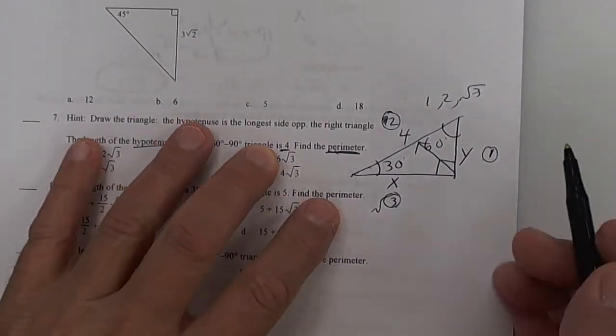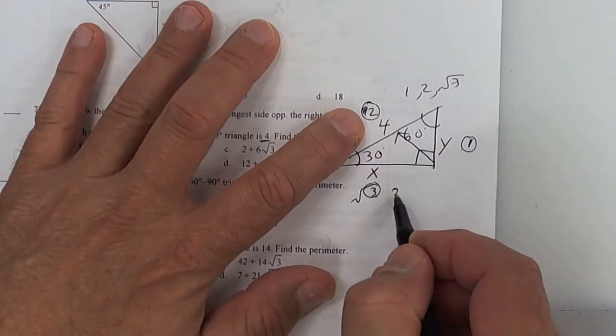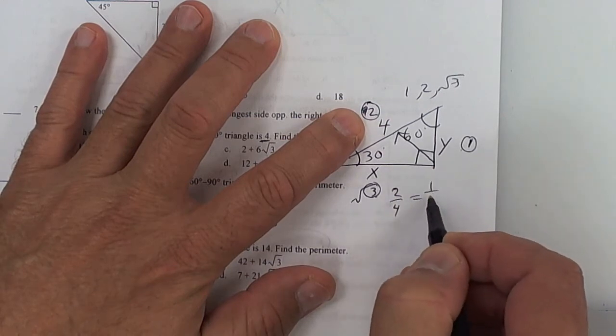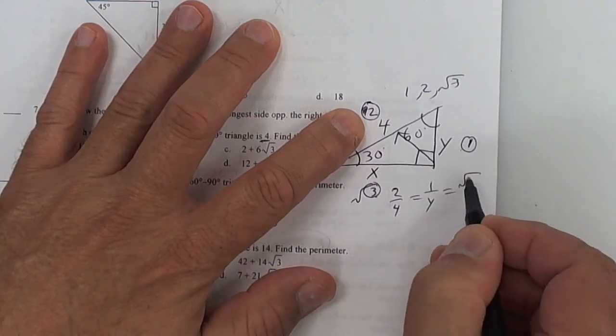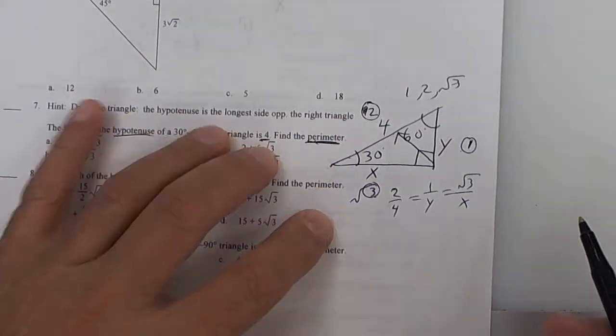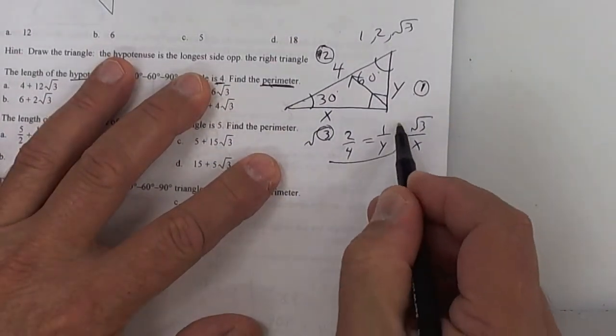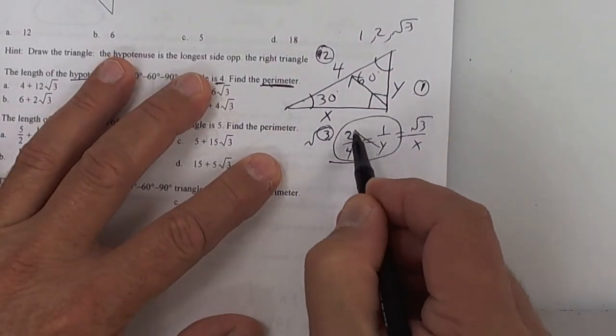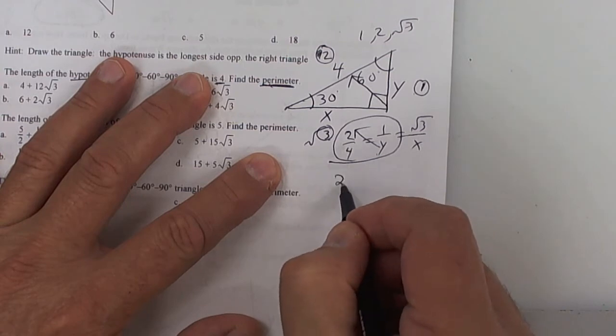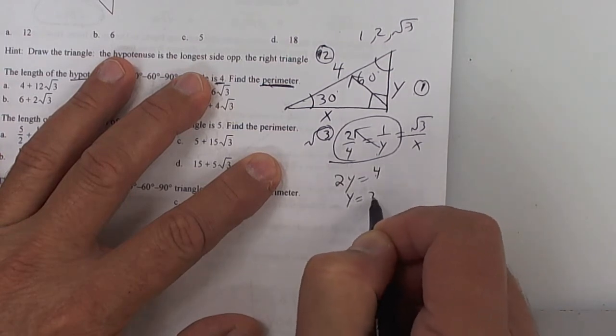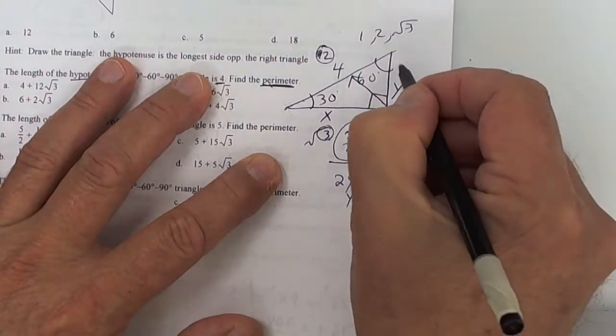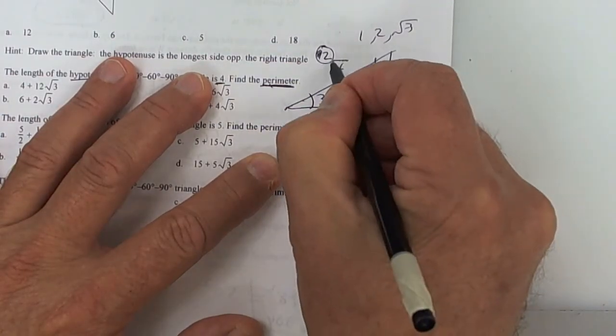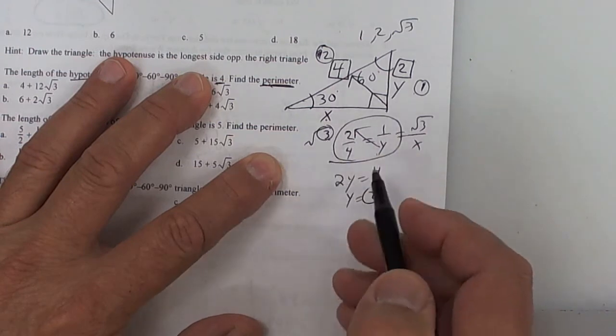So you're going to put your circles on top. So 2 over 4 equals 1 over y equals square root of 3 over x. You're going to use this one right here to find y. So this is an easy one. So you get 2y equals 4. Divide by 2, and you get y equals 2. So right here you have a 2, you have a 4. All I need is this last one, and then add them up.